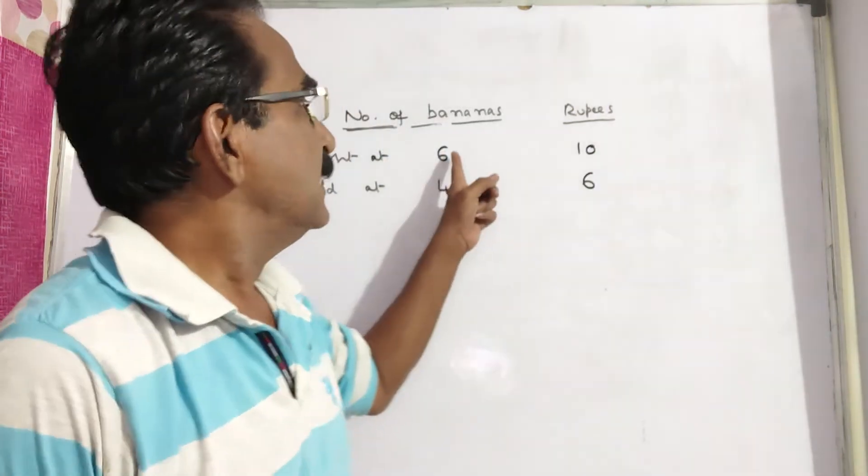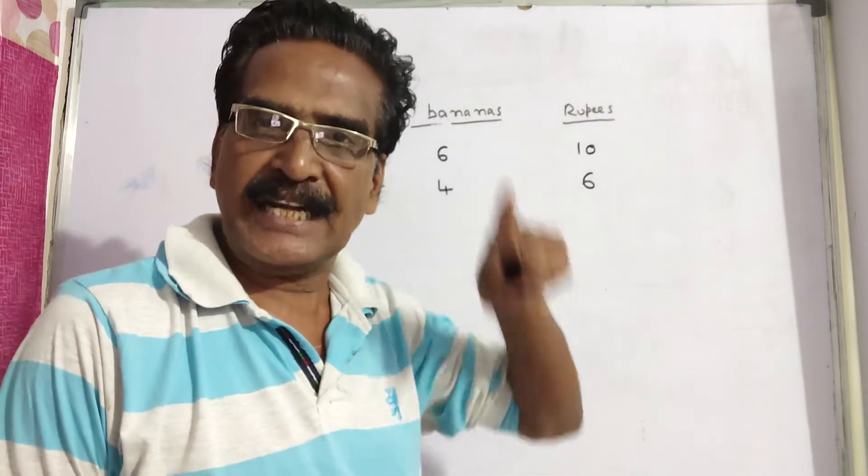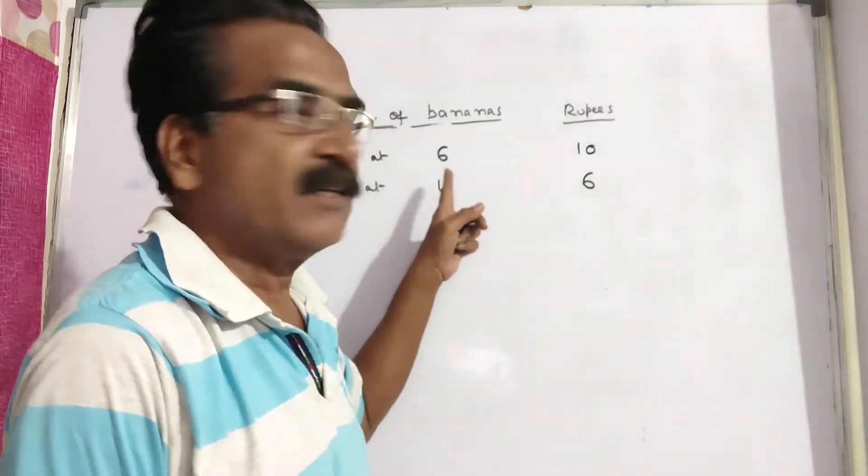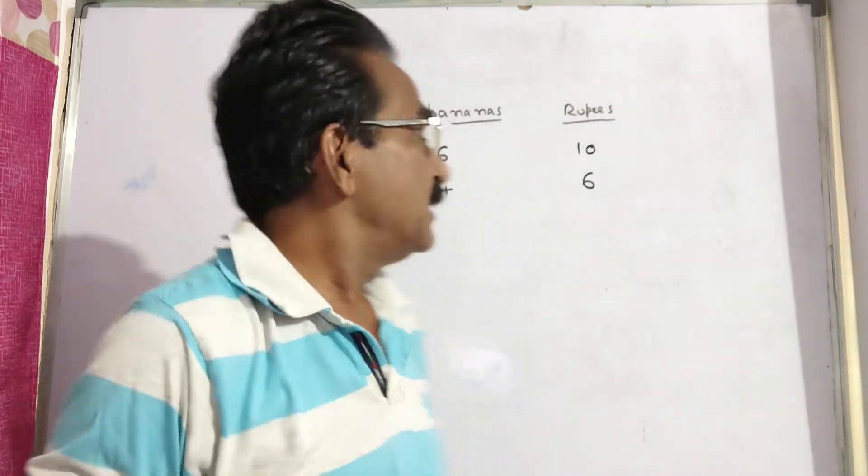See friends, a vendor bought 6 bananas at rupees 10 and sold them at 4 bananas for 6 rupees. So, what is his gain or loss percent?